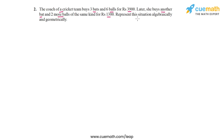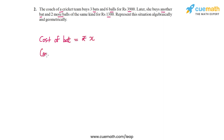This question is very similar to the first question of this exercise. There are two unknowns or variables in this situation — the cost of one bat and the cost of one ball. So let's assume that the cost of one bat is x rupees and the cost of one ball is y rupees. So x and y are the two variables or unknowns in this question.